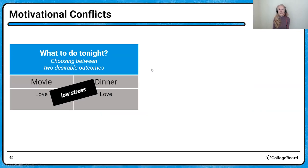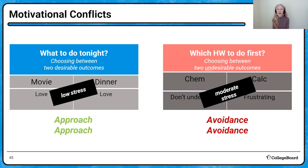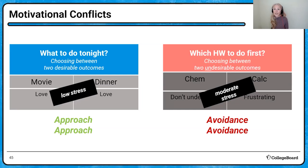Let's move to motivational conflicts. There are certain motivational conflicts — for example, which homework to do first. Approach-approach is when you have two really positive, desirable outcomes: go to a movie or go to dinner — either one's great, very little stress. Avoidance-avoidance is when you have two undesirable choices — like having to do chem or calc homework when you don't understand either. That can cause a moderate amount of stress. Explanatory styles and the actual conflict you've encountered both contribute to stress.